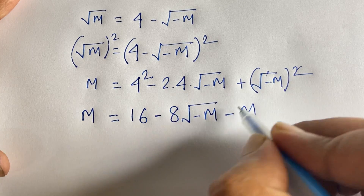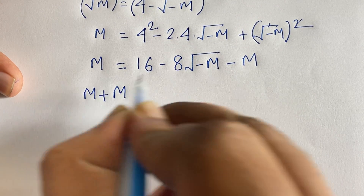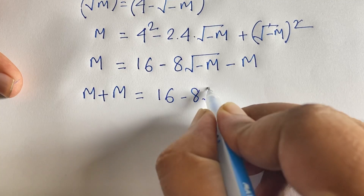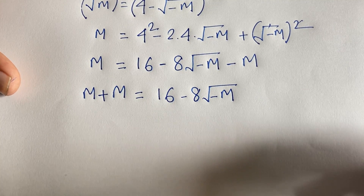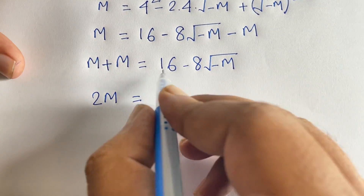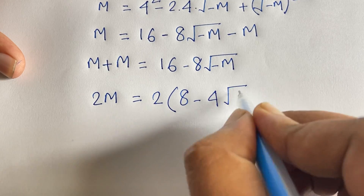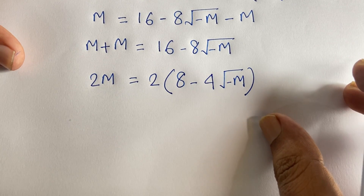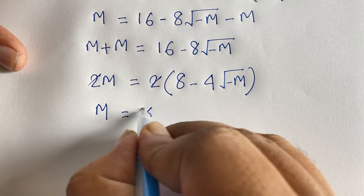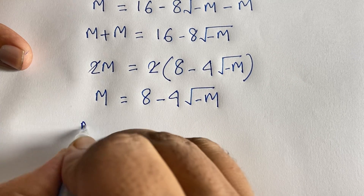Rearranging: m plus m = 16 minus 8√(-m), so 2m = 16 minus 8√(-m). Dividing both sides by 2: m = 8 minus 4√(-m).